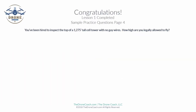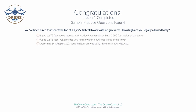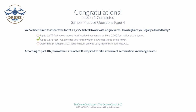Question: You've been hired to inspect the top of a 1,275-foot-tall cell tower with no guy wires. How high are you legally allowed to fly? Remember, you can fly 400 feet above the top of that structure while remaining within a 400-foot radius, so the answer is up to 1,675 feet AGL. According to Part 107, how often is a remote pilot required to take the recurrent aeronautical knowledge exam? Every two years.